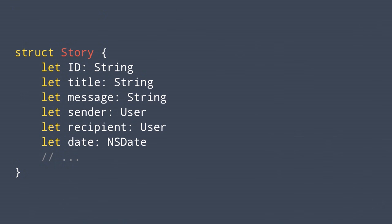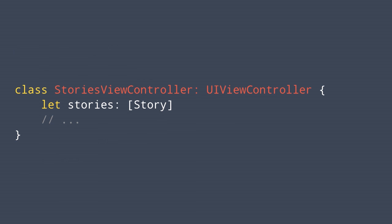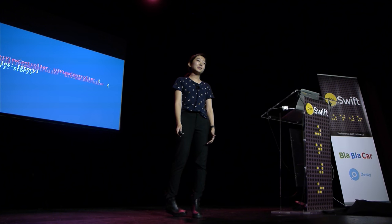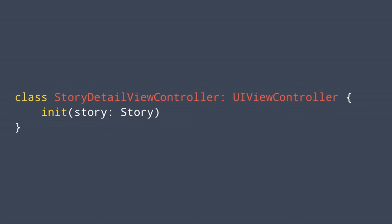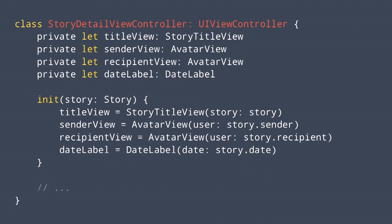One of these stories might be modeled like this. The story has an ID, title, message, a sender, recipient, date, and a few other things. We can show all these in a Stories view controller, which has a list of stories. You can tap into one of them, and we present a story detail view controller. The story detail view controller can be initialized using a story.